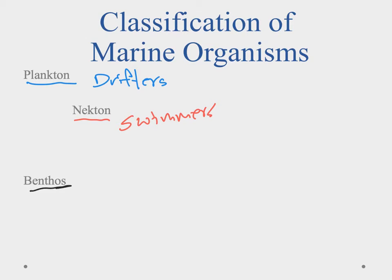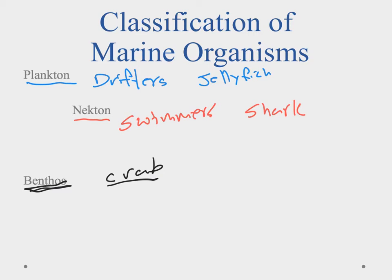Finally we have the benthic organisms, or benthos. These live down on the bottom and aren't affected as much by the water. A crab living on the bottom would be a benthic organism. A shark swimming through the ocean would be nekton. And something like a man-of-war or jellyfish — even though they can swim short distances, they're really at the mercy of currents — those would be plankton. These are the three large grouped categories.